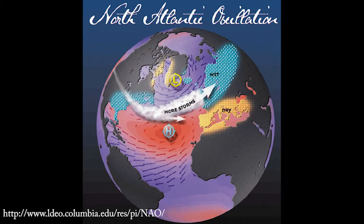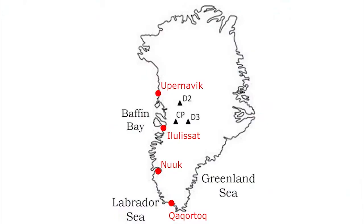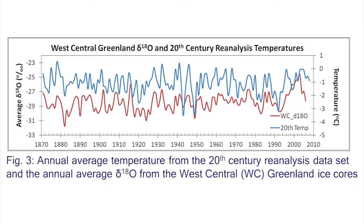The North Atlantic Oscillation basically dictates the strength and location of the Atlantic storm track. Given the influence of the NAO on Greenland, especially western Greenland, we have three ice cores from that region, which should hold a good record of the North Atlantic Oscillation throughout time based on accumulation and temperature.